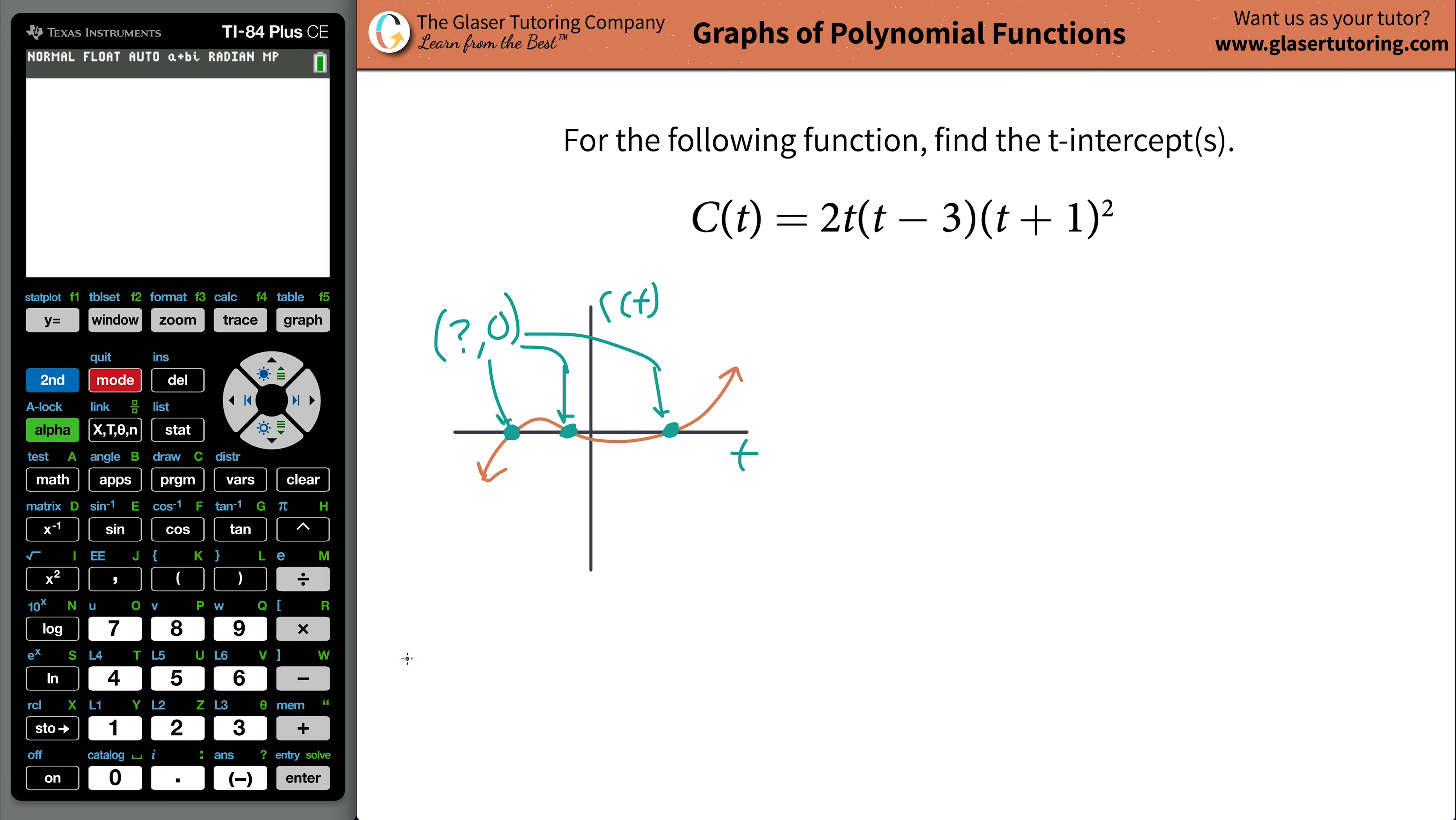So in other words, whenever they're asking you to find t-intercepts or x-intercepts or whatever the case is, you have to know that the y-value of the function, or aka the function's value, in this case c of t, must be equal to zero. That's your guiding principle.